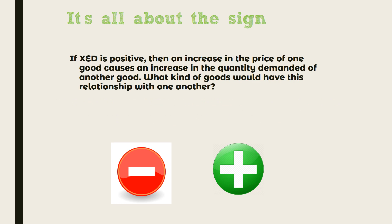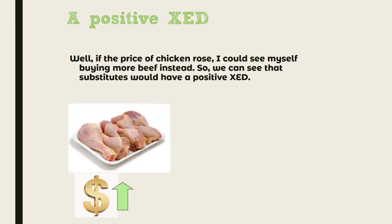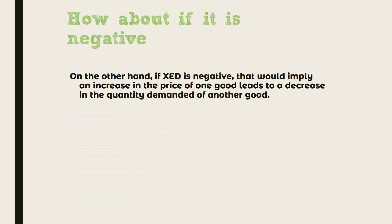If XED is positive, then an increase in the price of one good causes an increase in the quantity demanded of another good. For example, if the price of chicken rose, you might buy more beef instead. We can see that substitutes have a positive XED.